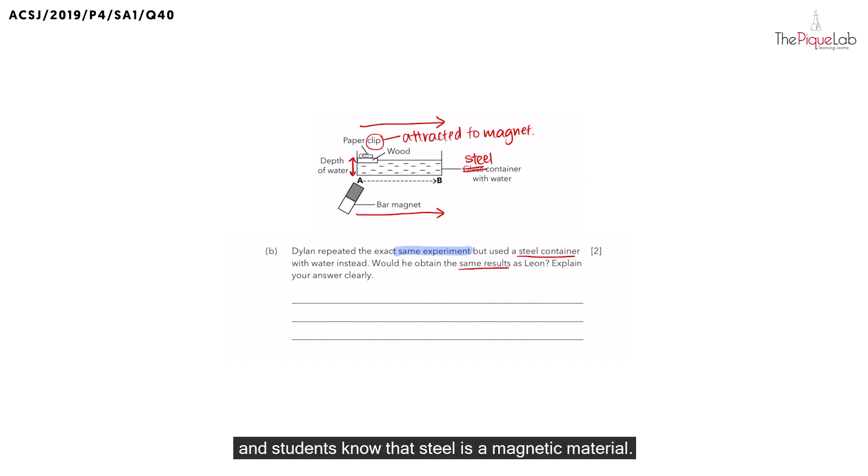So if I was to change my container into a magnetic material, do you think the paperclip can still get attracted to the bar magnet? The answer is no. Why? Due to the golden rules of magnetism, particularly rule number 2. Rule number 2 tells us that a magnet's magnetism can only pass through non-magnetic materials. That means if I want to attract the paperclip, I must have non-magnetic materials between the magnet and the paperclip. And that was the case earlier, when we had only water, wood and glass between the paperclip and the magnet.